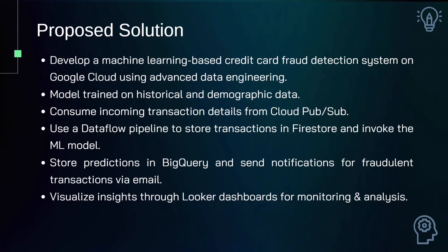We have developed a machine learning based credit card fraud detection system on Google Cloud using advanced data engineering techniques. For training, we used historical and demographic data. This data is sent through a pipeline using Cloud Pub/Sub, which is a messaging service in Google Cloud. Then we use a Dataflow pipeline which stores transactions in Firestore and also invokes the ML model. After detection, we store the predictions in a BigQuery table, and then we send notifications via email to the bank as well as the customers affected by fraudulent transactions.